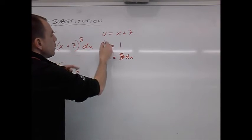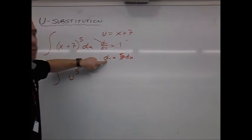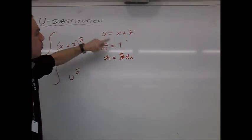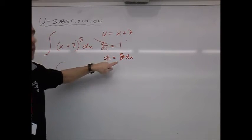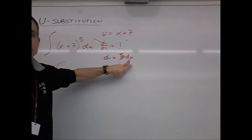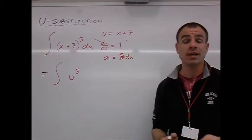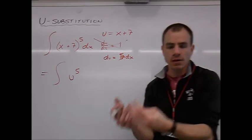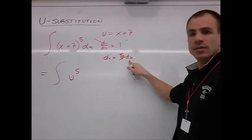We actually can kind of skip that step right there. When we take our derivative, we have du, and then we move the dx over here. The derivative of x plus 7 is just 1 right there. So it turns out that du is the same as dx. That's not always the case. Most of the time, it will not be the case. But in this very basic example that we're starting off with, it does work out that du is the same thing as dx.